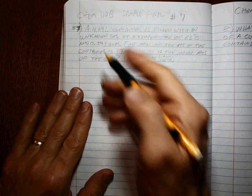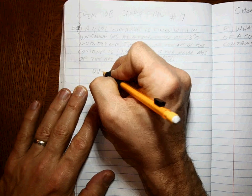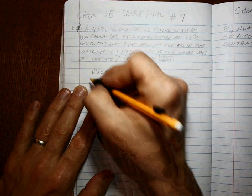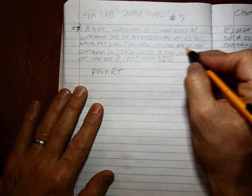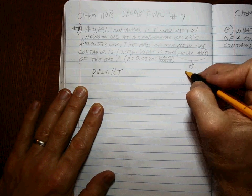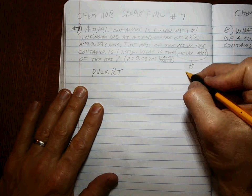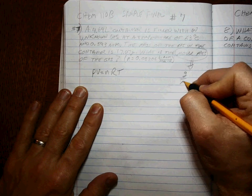They give you R. Okay, it's a gas. PV equals nRT. They want to know the molar mass. What are the units of molar mass? That's off the periodic table, right? It's grams per mole.